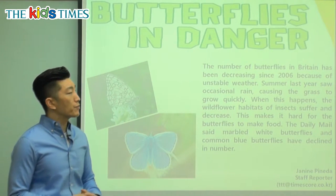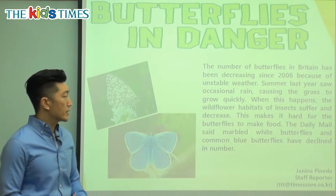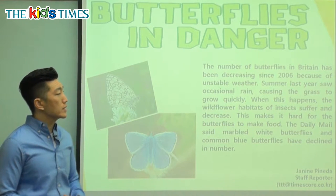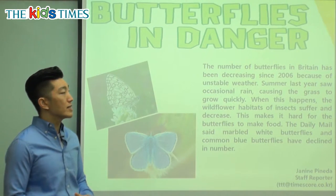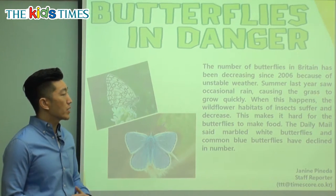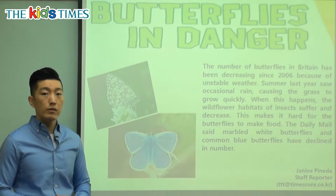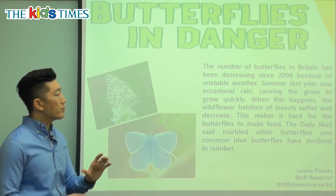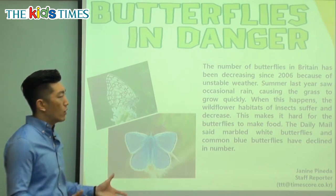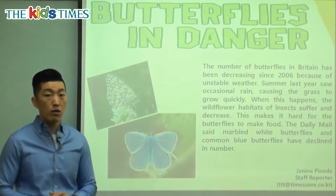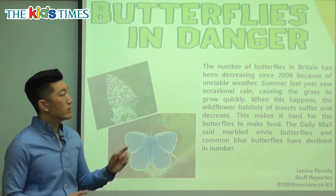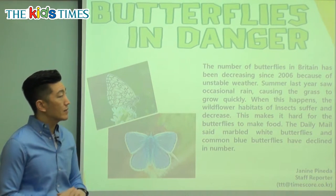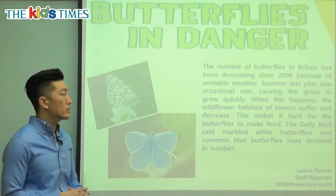It says the number of butterflies in Britain has been decreasing since 2006 because of unstable weather. Let's take a look at that first sentence. The number of butterflies — that means how many butterflies there are in the country, or in the area of Britain — has been decreasing.